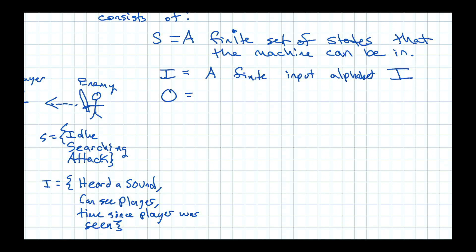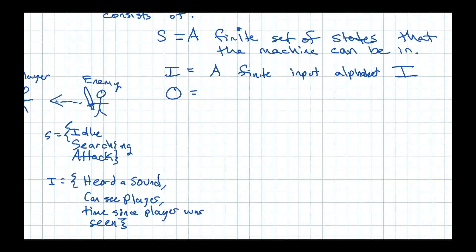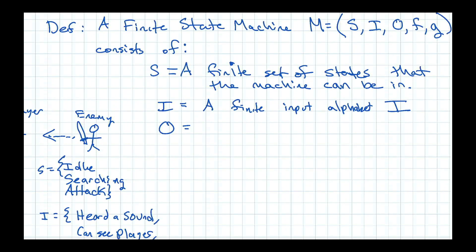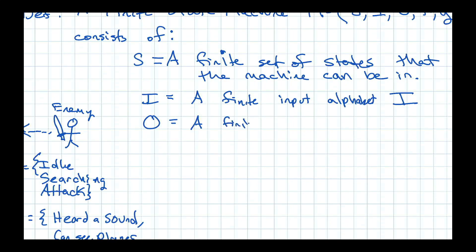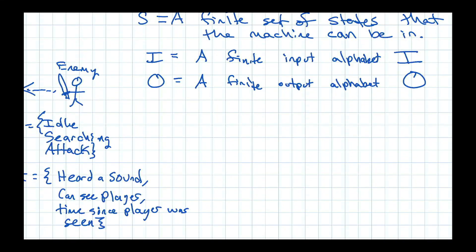Then O — outputs — are actions that the finite state machine needs to take. So beyond the state transitions, what does the machine actually do? It's going to be a finite output alphabet. The words 'alphabet' come from section 13.1, but we don't really need a precise definition of those. So we have S, I, O so far.